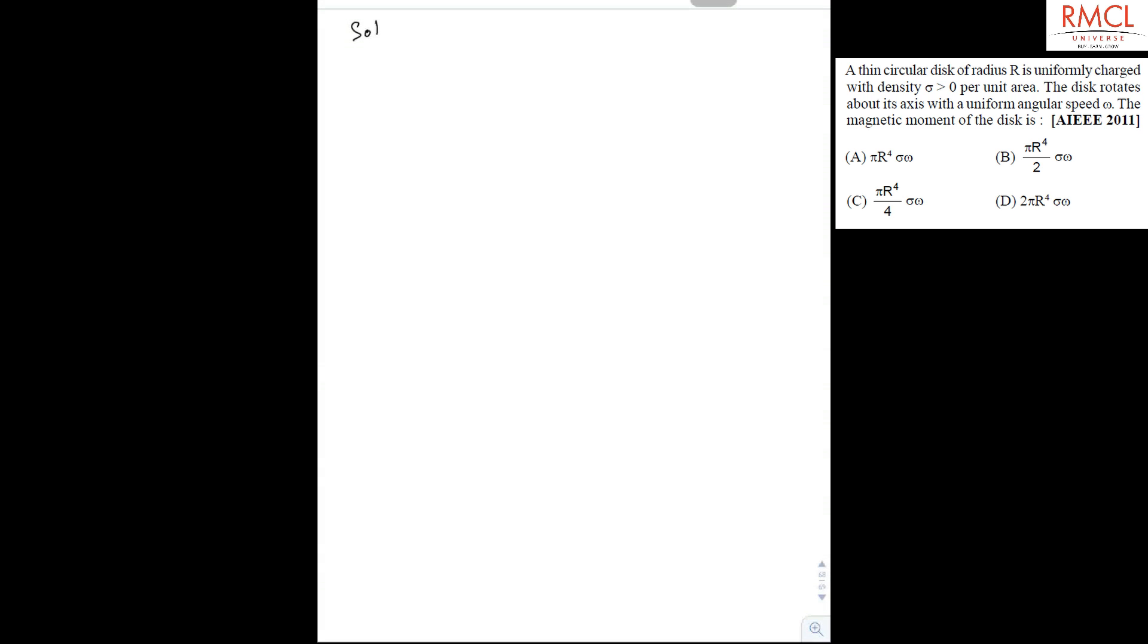In this question, it is given that there is a circular disk of radius R charged with charge density sigma, and this disk is rotating with angular speed omega. Now we have to find the magnetic moment of this disk.